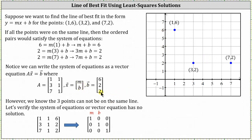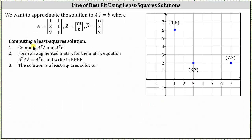But we can determine the slope and vertical intercept for the line of best fit by finding an approximate solution using the method of least squares. To compute a least squares solution: first, compute A-transpose times A and A-transpose times vector b. Second, form an augmented matrix for the equation A-transpose A times vector x equals A-transpose times vector b, then write it in reduced row echelon form. The solution gives us the slope and vertical intercept for the line of best fit.